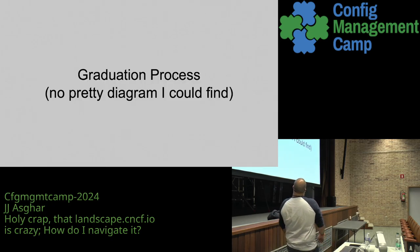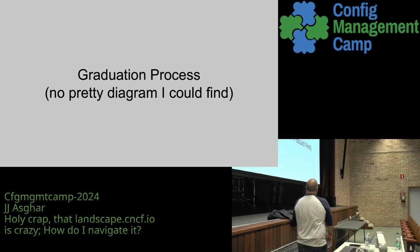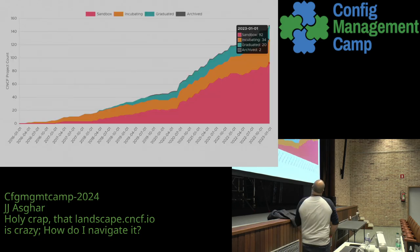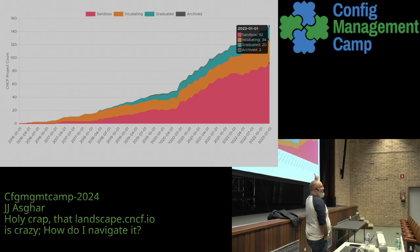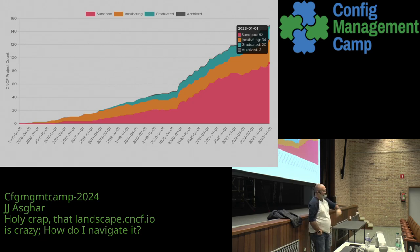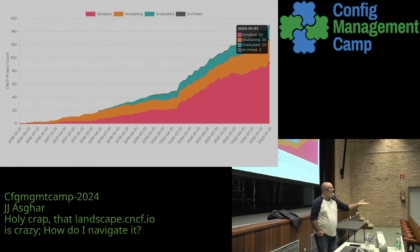The graduation process — we've already kind of gone through it. It's a much bigger deal, and there was no pretty diagram because it is much more involved with a lot of different sign-offs. What is the most interesting number on that chart? Archive. There's only been a significant progression, but only two projects archived. What does that tell you about the landscape?